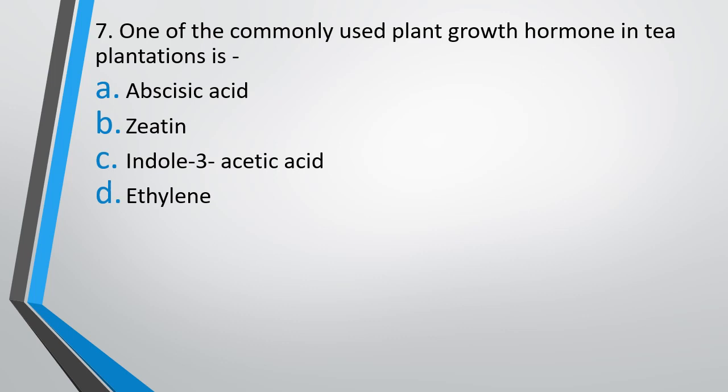Question 7. One of the commonly used plant growth hormones in tea plantation is: abscisic acid, zeatin, indole-3-acetic acid, or ethylene? The correct answer is option C — indole-3-acetic acid.